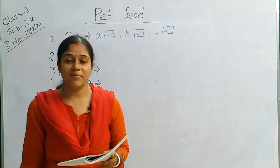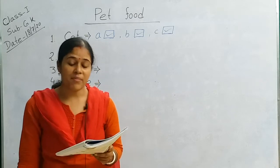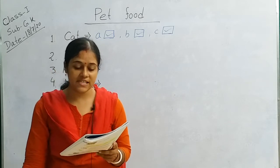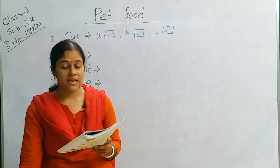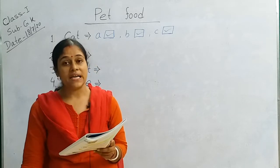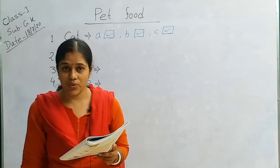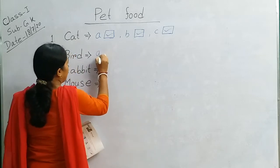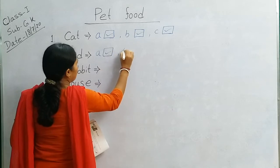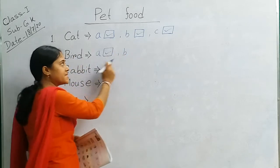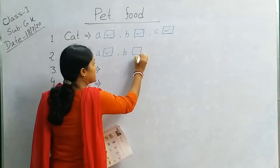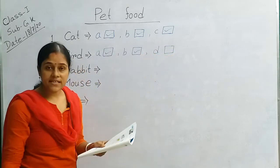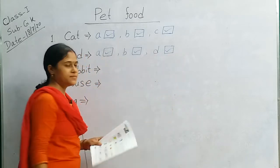Next, number 2, bird. Bird eats number A, pulses, kidney beans. The picture of kidney beans are here, so bird eats pulses. Bird eats green chili. Bird eats bones? No. Bird eats number D, insects. So number A put tick mark, number B put tick mark. Bird eats pulses, bird eats green chili, and number D, bird eats insects or flies.